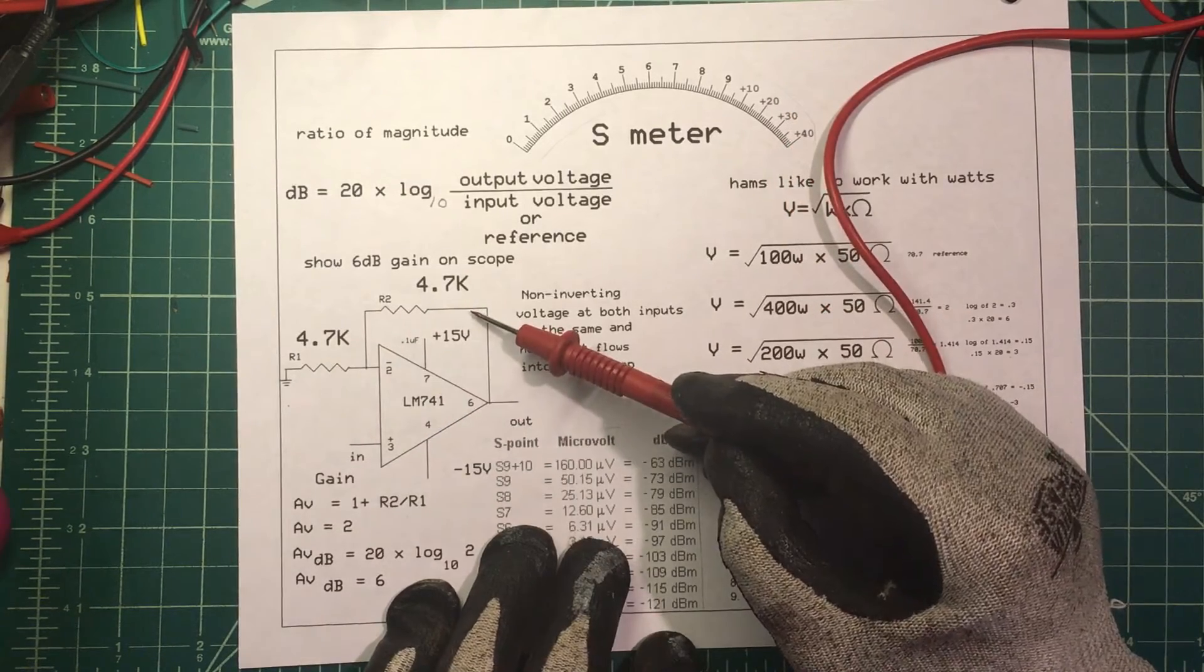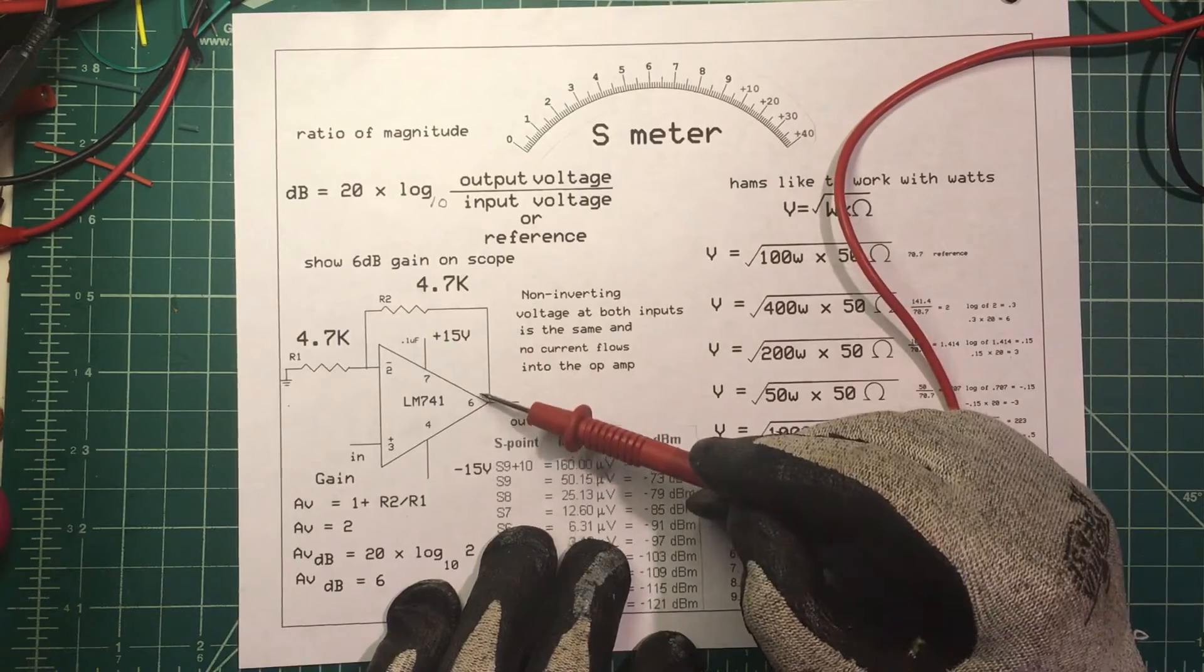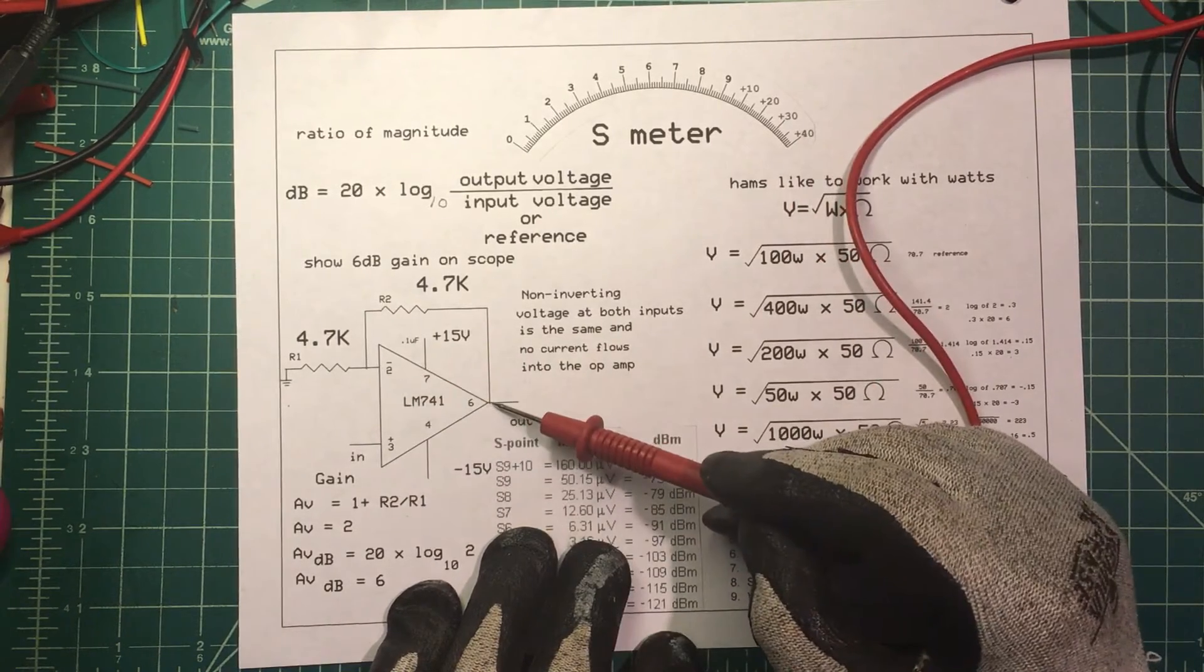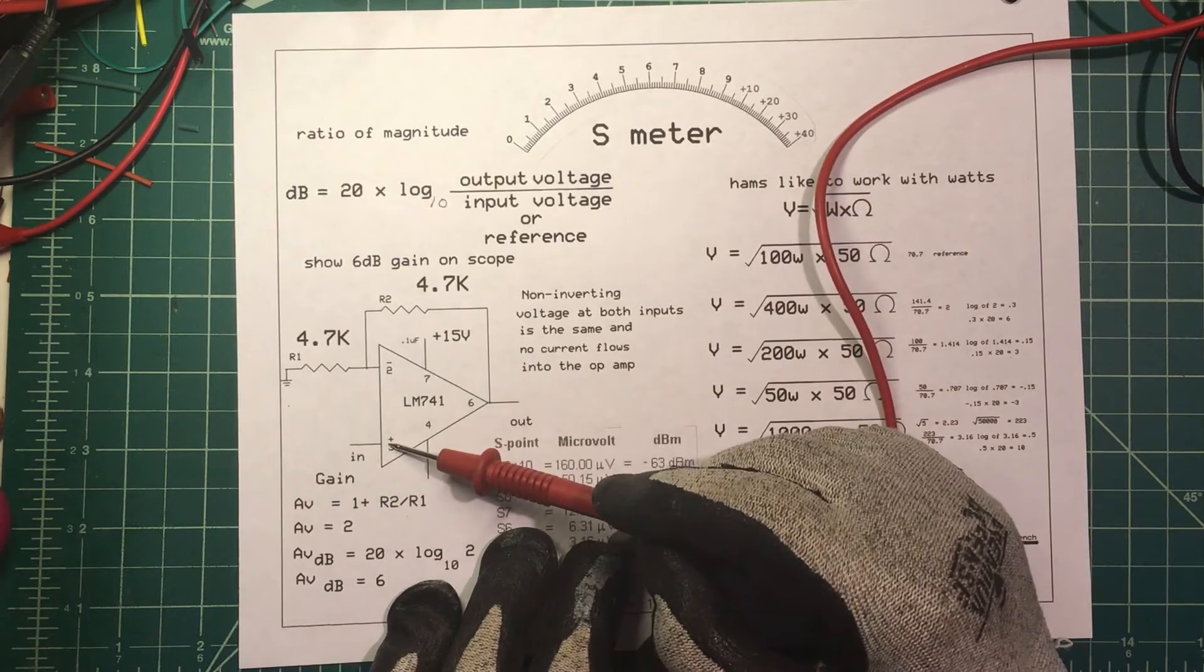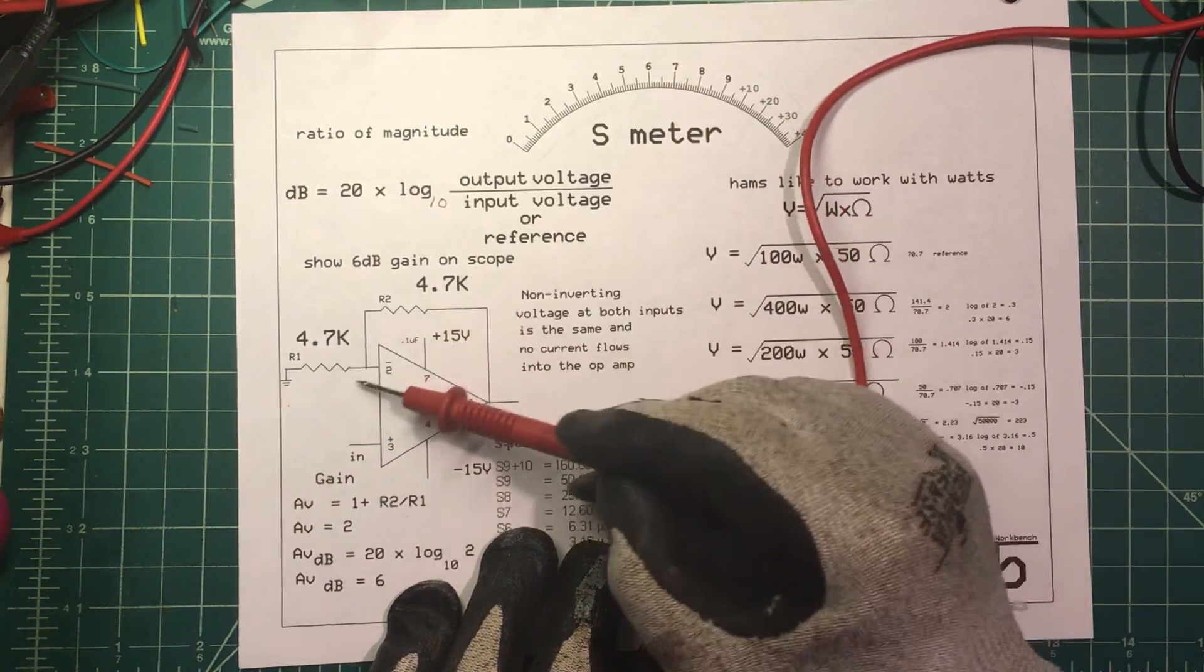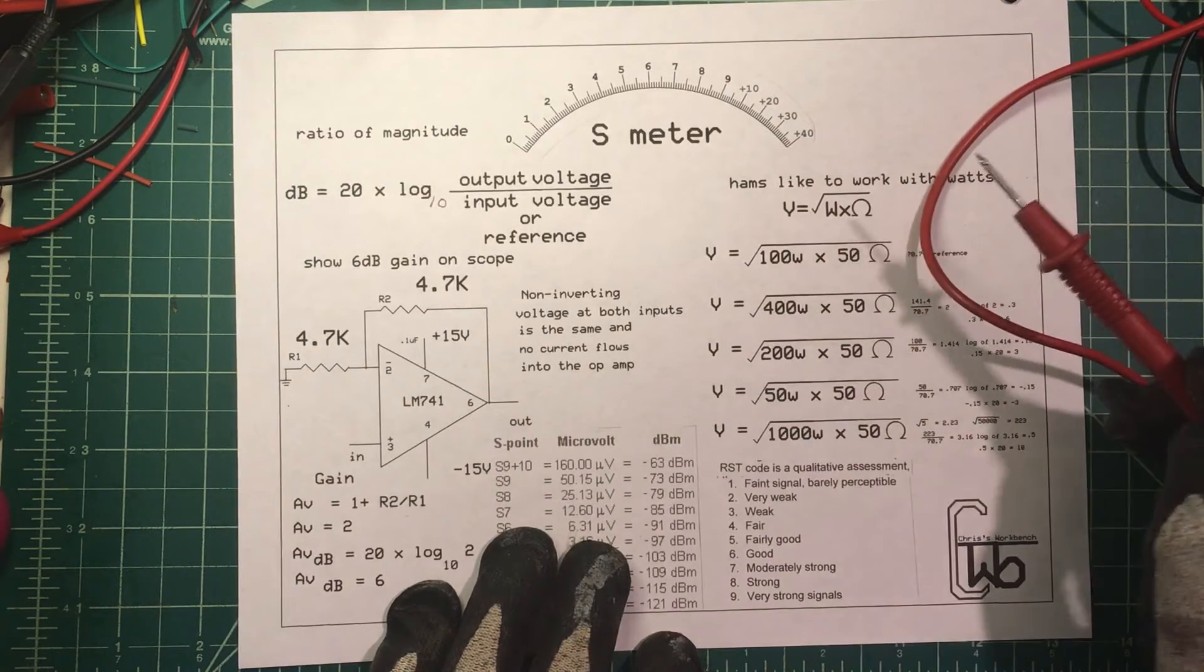So the current is going to flow through the resistors. It's going to be a voltage divider. So if we put one volt here, in order to get one volt here we need two volts here. If we put two volts here to get two volts here, we'll need four volts here because it's going to be going through this voltage divider.